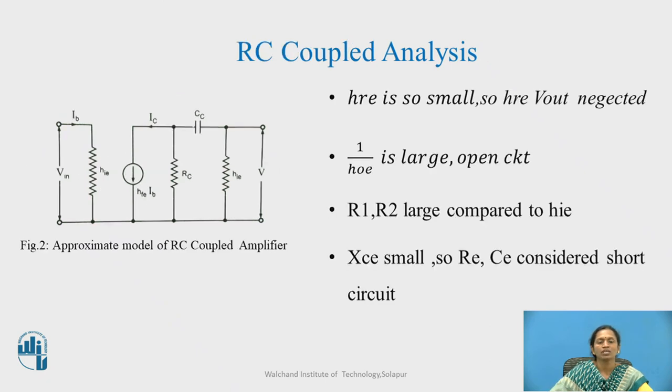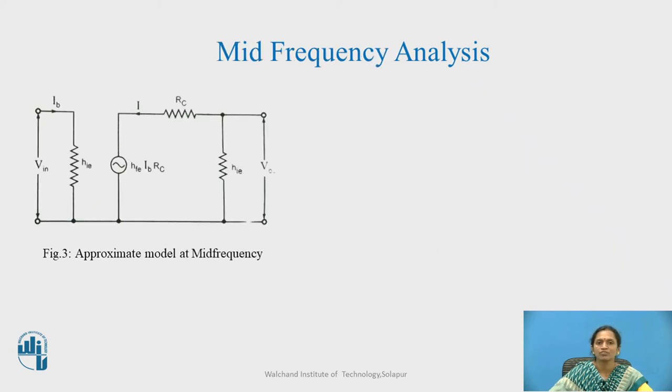One more thing, capacitor as it is a mid frequency analysis, we are considering for the XCC value is very, very small as frequency is moderately large. We have this current flowing through the output path or this loop is equal to HFE into IB into RC which is a voltage source upon RC plus HI. RC is the first stage collector resistance and HI is the second stage input impedance. This is my I.